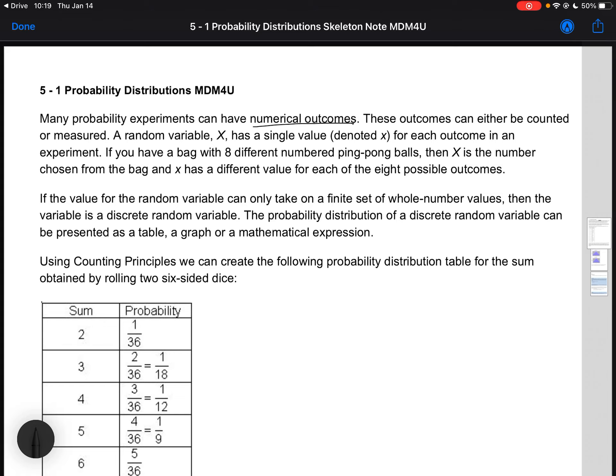If you have a bag with eight different numbered ping-pong balls, then X is the number chosen from the bag. Capital X and lowercase x has a different value for each of the eight possible outcomes. The probability of obtaining each of these outcomes when you combine them all together is called the probability distribution for the experiment.